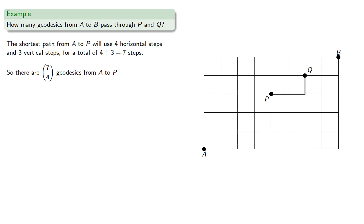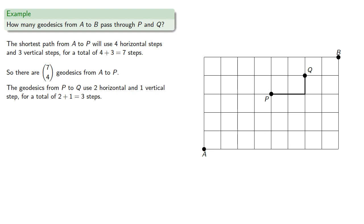The geodesics from P to Q use two horizontal and one vertical steps for a total of three steps. For variety, let's choose one of them to be vertical, so there are three choose one geodesics.